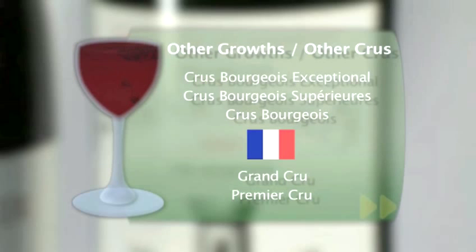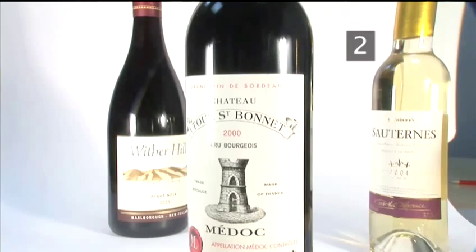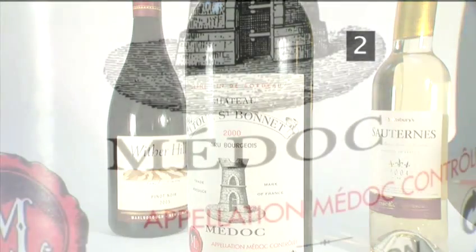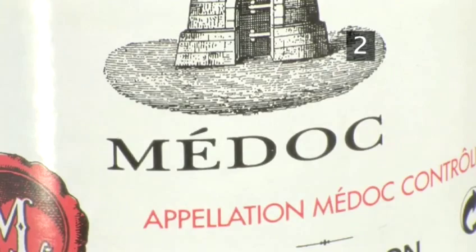Elsewhere in France there are two main distinctions: Grand Cru and Premier Cru. You find these categories in regions like Burgundy and Alsace. These refer to individual vineyards. A Grand Cru wine is made from the grapes from a Grand Cru vineyard and should be one of the best wines a region can offer. Premier Cru is still a very good wine, but it is less good than a Grand Cru.